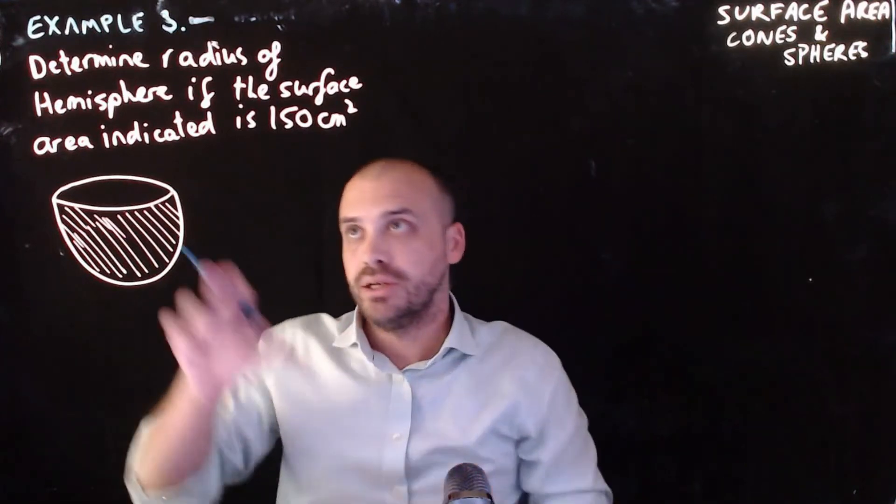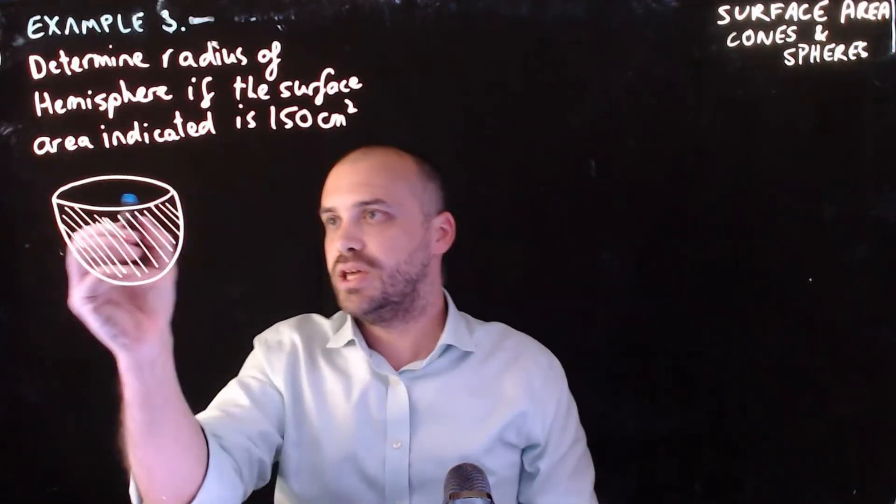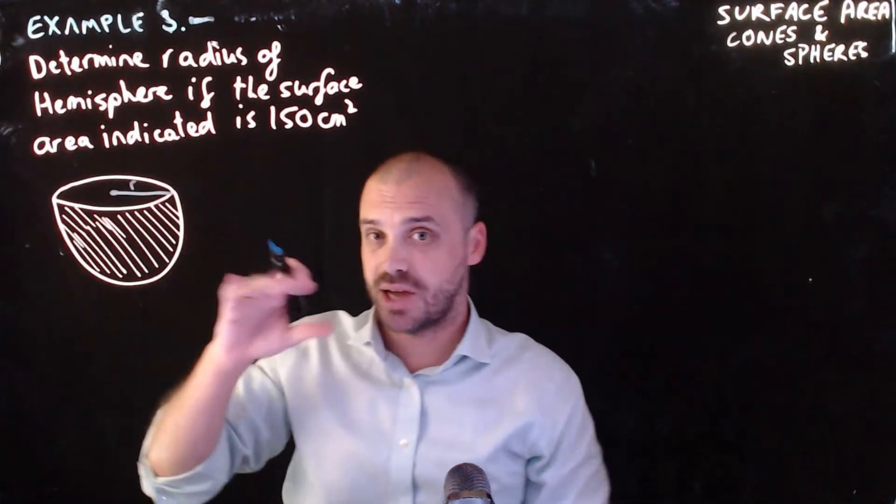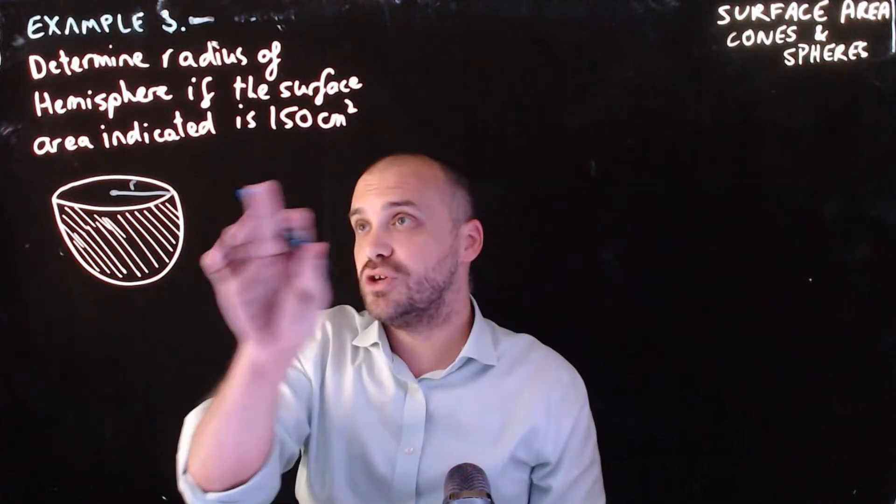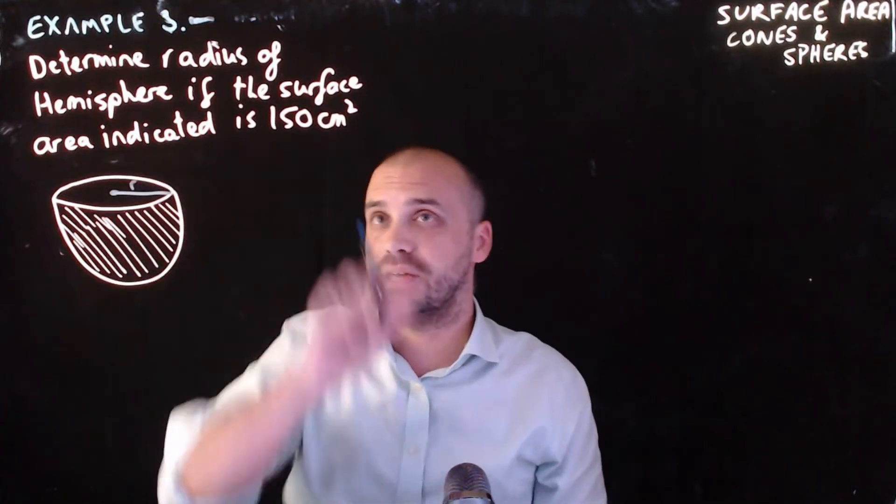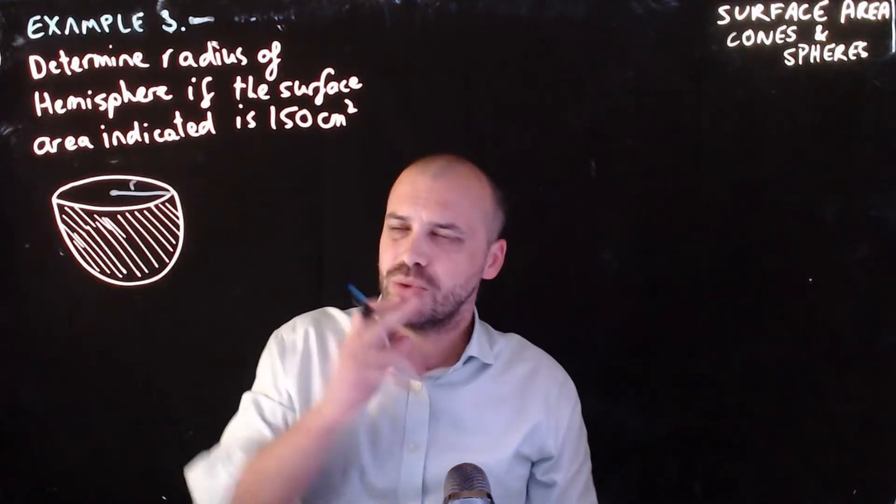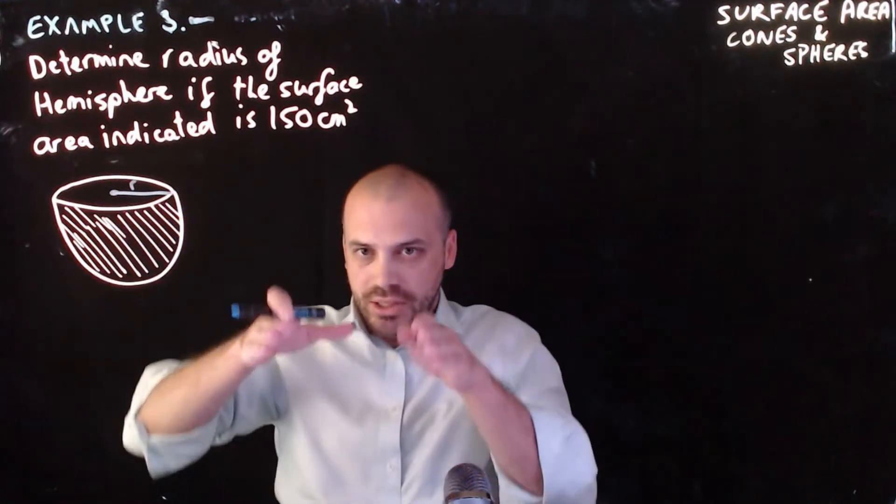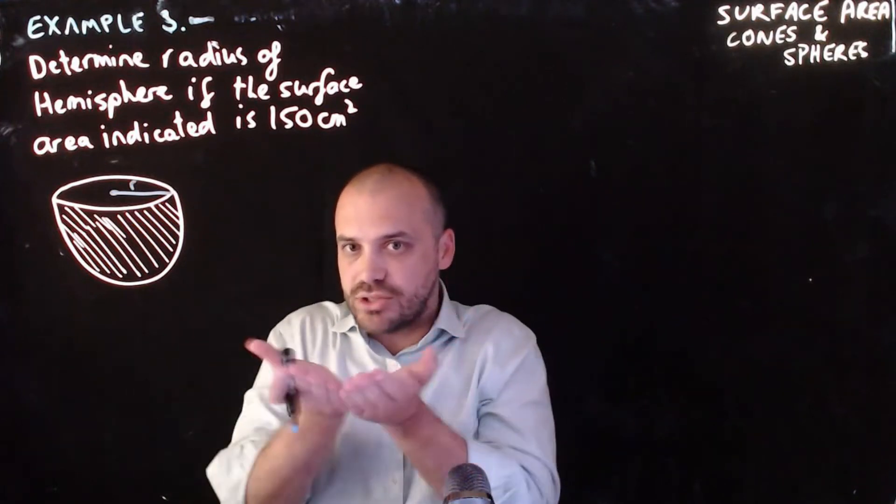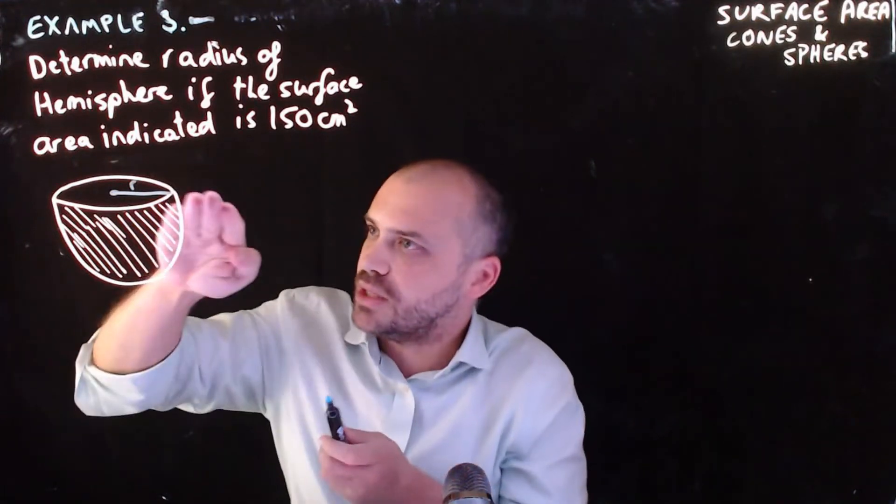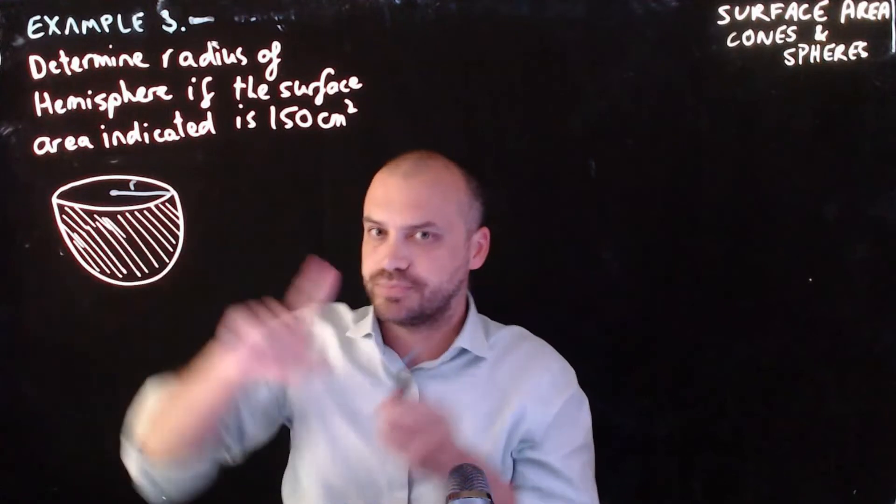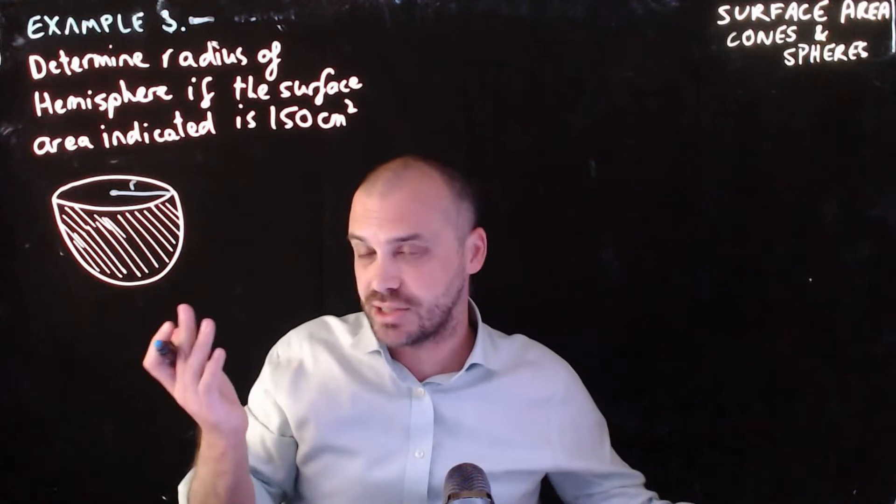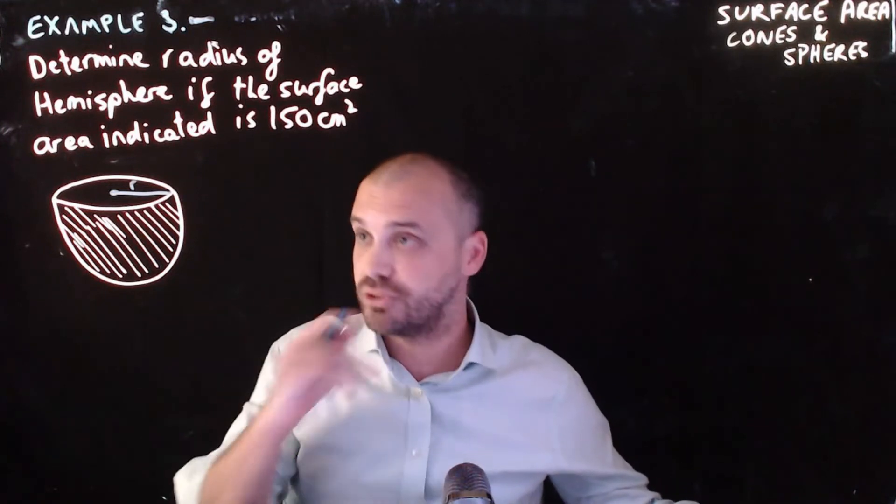All right, so now we're going to work backwards a little bit. Determine the radius of the hemisphere, so we're going to determine r. A hemisphere is half of a sphere, so you can see that here. If the surface area indicated is 150cm squared. What do I mean by the surface area indicated? You can see I've shaded this outside bit. So we're only interested in the outside of the hemisphere. It doesn't have a flat top on it. The question would be different if it had a flat top on it, but this question doesn't have a flat topper, so the question's not different.